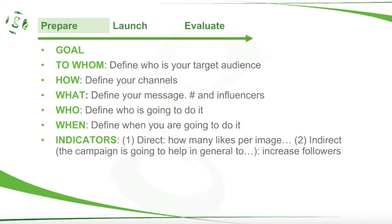Then who — define who is going to do it, meaning that Christina is going to do it, Aniol is going to do it the following week. So who is in charge? When it's going to be done — defining deadlines is very important. And then indicators: you should set yourself some goals — direct goals, like how many likes per image you want to achieve, and indirect goals, such as the campaign helping to increase followers overall.